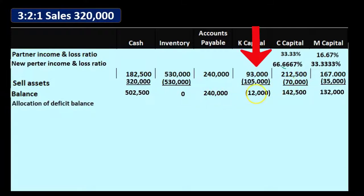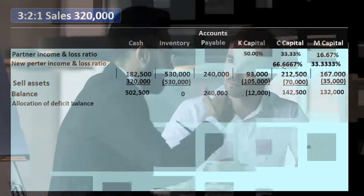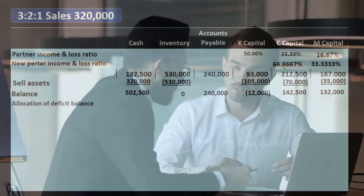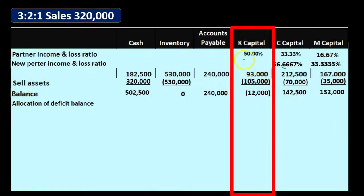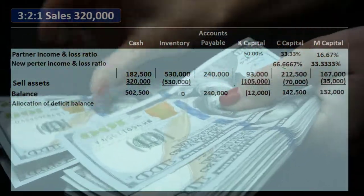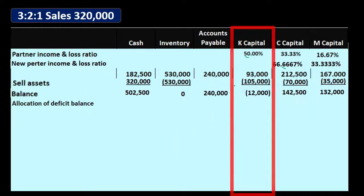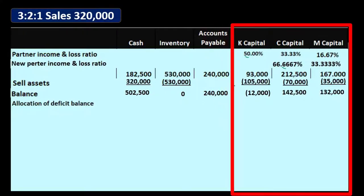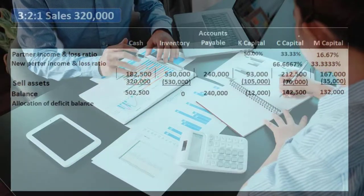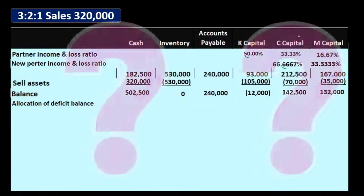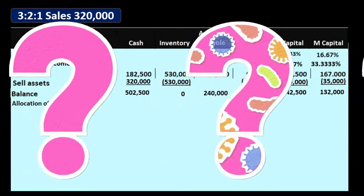We go to K and say: 'Your capital account is now negative — could you pay it back?' We allocated the loss per the profit-sharing agreement, which brought your capital from positive to negative, meaning you owe the company money. K may say he won't pay because it's a liquidation and he just wants out. We won't get into the legal scenario — if K doesn't pay, we'll have to allocate that deficit to the remaining partners.